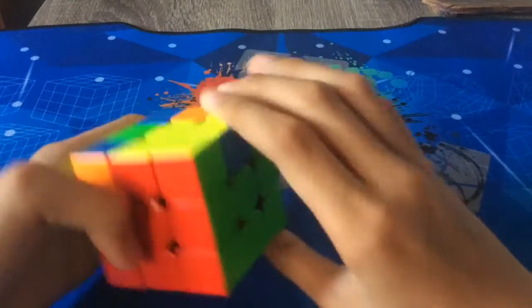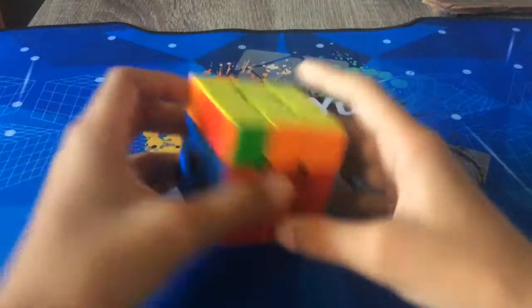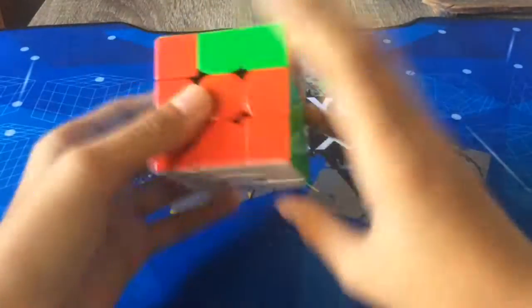For OLL he got Ducky. He did a left white sexy, F white prime, U2, which makes a J perm.